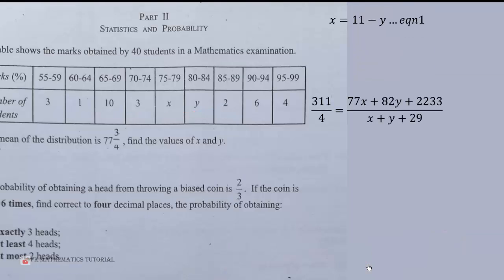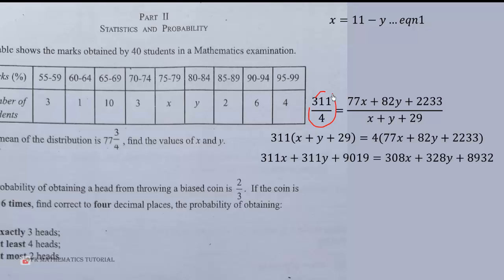We change the 77 and 3/4 to an improper fraction. Then what we do is cross multiply and expand it. Group like terms: 311 minus 328, then 892 minus 9019, to get equation 2.